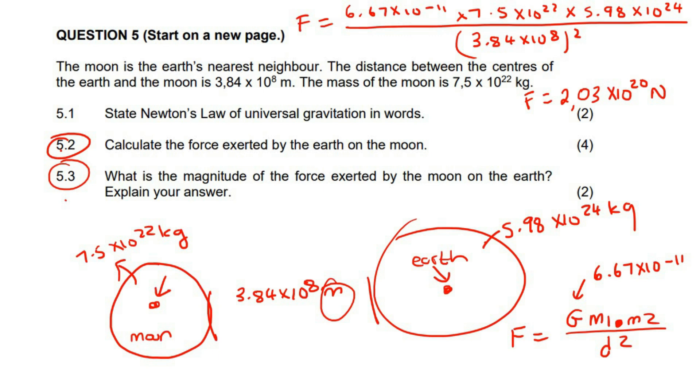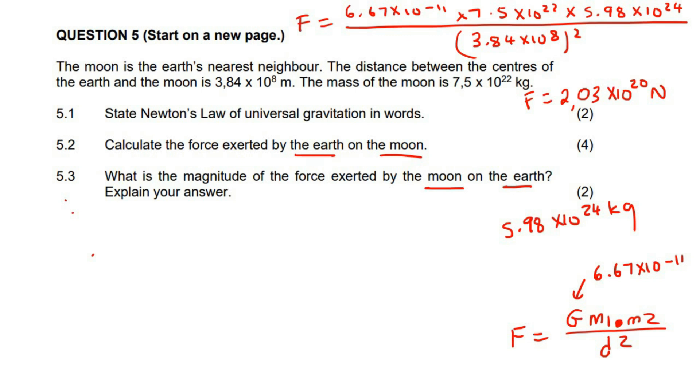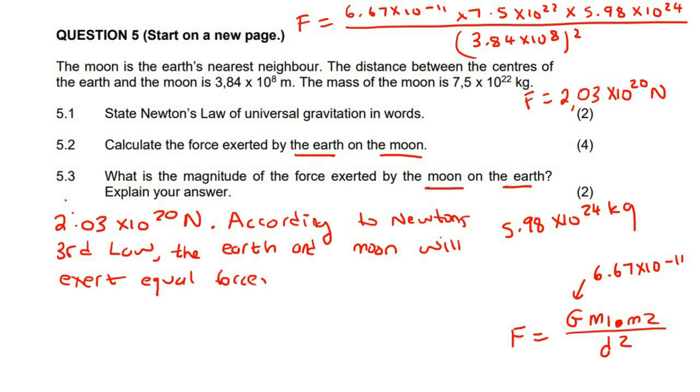This last one says, what is the magnitude of the force exerted by the moon on the Earth? Because here it said the Earth on the moon. Now, this is where our home dog, Newton, comes to save the day. So, we will say the exact same value that we got in the previous one. So, we will just say 2.03 times 10 to the 20. Then we can just say, according to Newton's third law, the Earth and moon will exert equal forces on each other, but in opposite directions. I don't know why this is only worth two marks. If it was two marks, I would have just said that one, and my reason would have been Newton's third law. But then I went and looked at the memo, and I'm like, what? For two marks, you have to go write this, you list a thing.